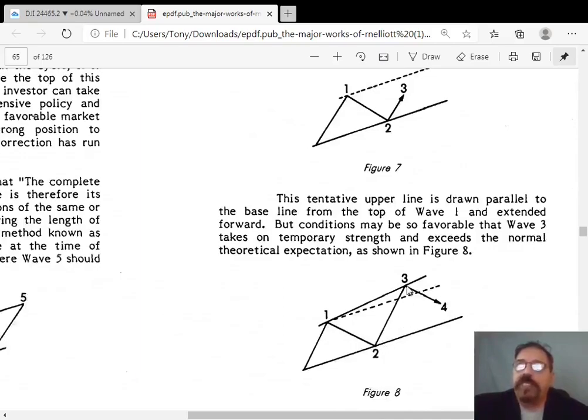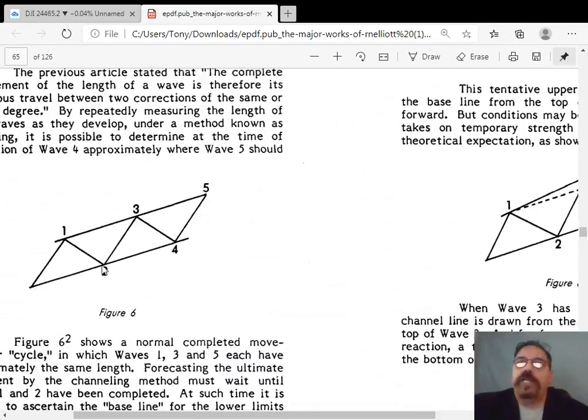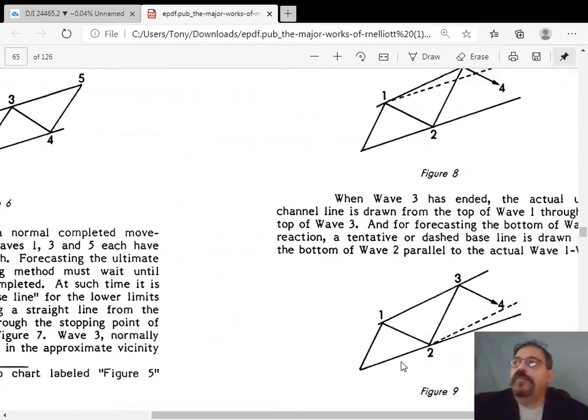And once the wave 3 is in place, he then draws another line from the top of wave 1 to the top of wave 3 and draws parallel to that. So he joins the 1 with the 3 because it went past his initial channel target and then he moves the steepness of the channel up to that angle from the 2. So simply I'll just state that again. He connects 1, top of 1 with top of 3, draws parallel with the 2 and that's his target for wave 4.